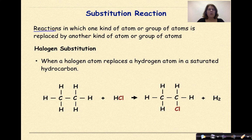Reactions in which one kind of atom or group of atoms is replaced by another kind of atom or group of atoms. One type of substitution is known as halogen substitution. When a halogen atom replaces a hydrogen atom in a saturated hydrocarbon.